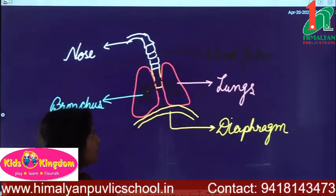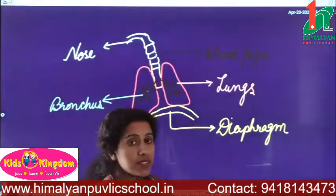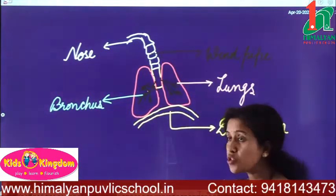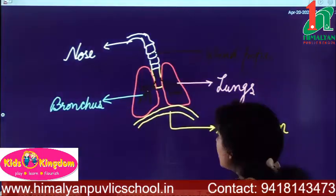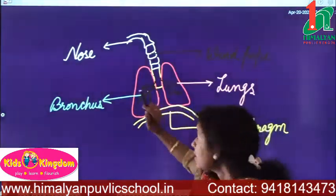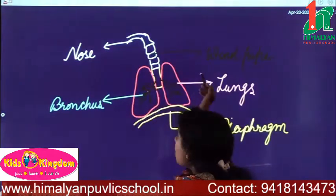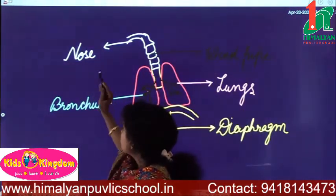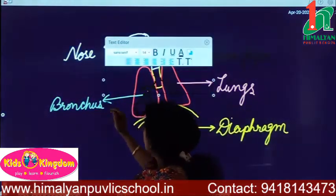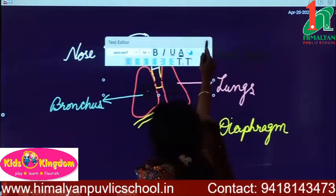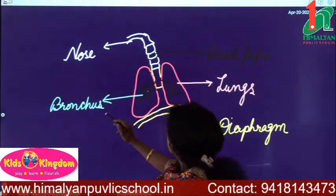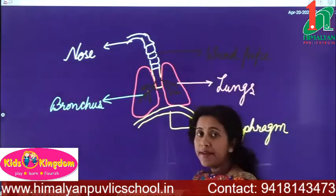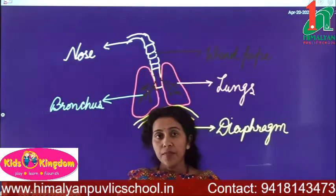Now what happens in the process of respiration? First of all, these are the organs of the respiratory system: nose, bronchus, windpipe, lungs, and diaphragm.